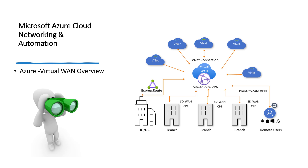Hey everyone, welcome back. Throughout this series we've been talking about different components to build networking on Azure Cloud. This time we are going to talk about Azure Virtual WAN. Azure Virtual WAN is a managed networking service provided by Microsoft Azure, designed to simplify and optimize connectivity between your various branch offices, data centers, and Azure cloud resources. Azure Virtual WAN brings together networking, security, and routing features into a unified and centralized management interface.